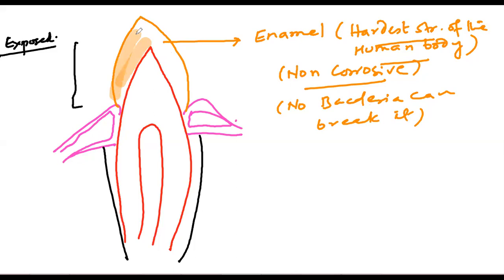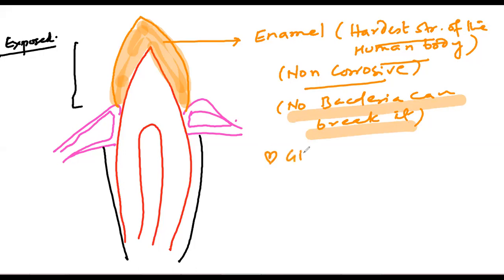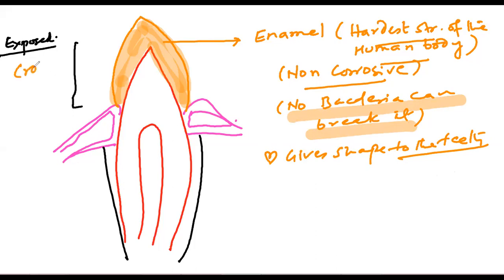If you keep your teeth clean, no bacteria can degrade the enamel. Enamel is only found in the exposed part, and it gives shape to the teeth — whether they are sharp or have cusps. The exposed part of the tooth is called the crown, the part in the gums is called the neck, and the part in the root is called the root.